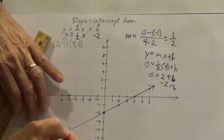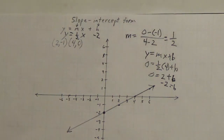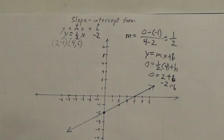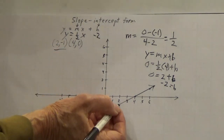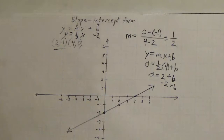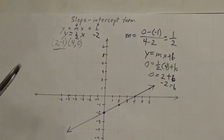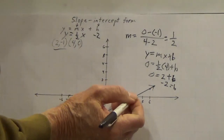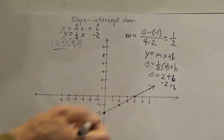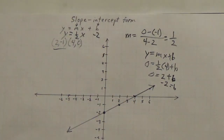And there is my line. My points should be on there. The point (2, -1) — this point is right there, right on my line. And (4, 0) — this point right here, right on my line. So that is slope-intercept form.